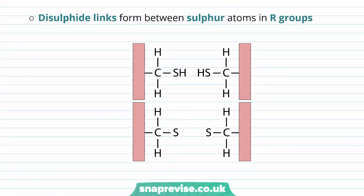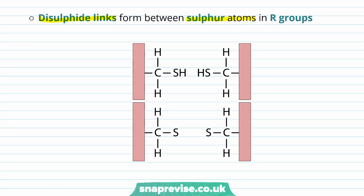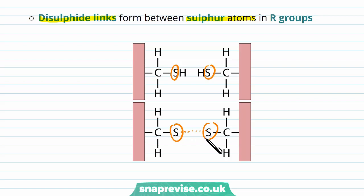There's another special type of bond we tend to see only in proteins called a disulfide link or a disulfide bridge. These form between any R groups that have sulfur atoms in them. There are only a few that do contain sulfur, but as you can see, some of them do. And when they come in contact with each other, they form a bridge between them. So this is another type of bond called a disulfide link.